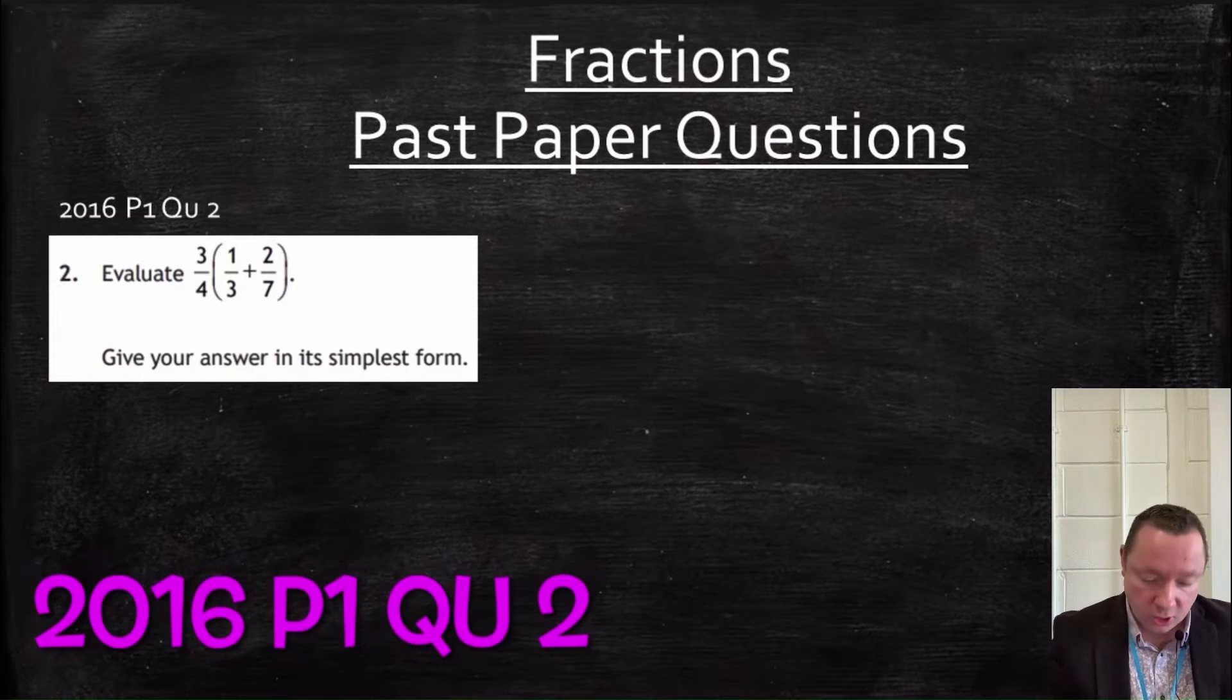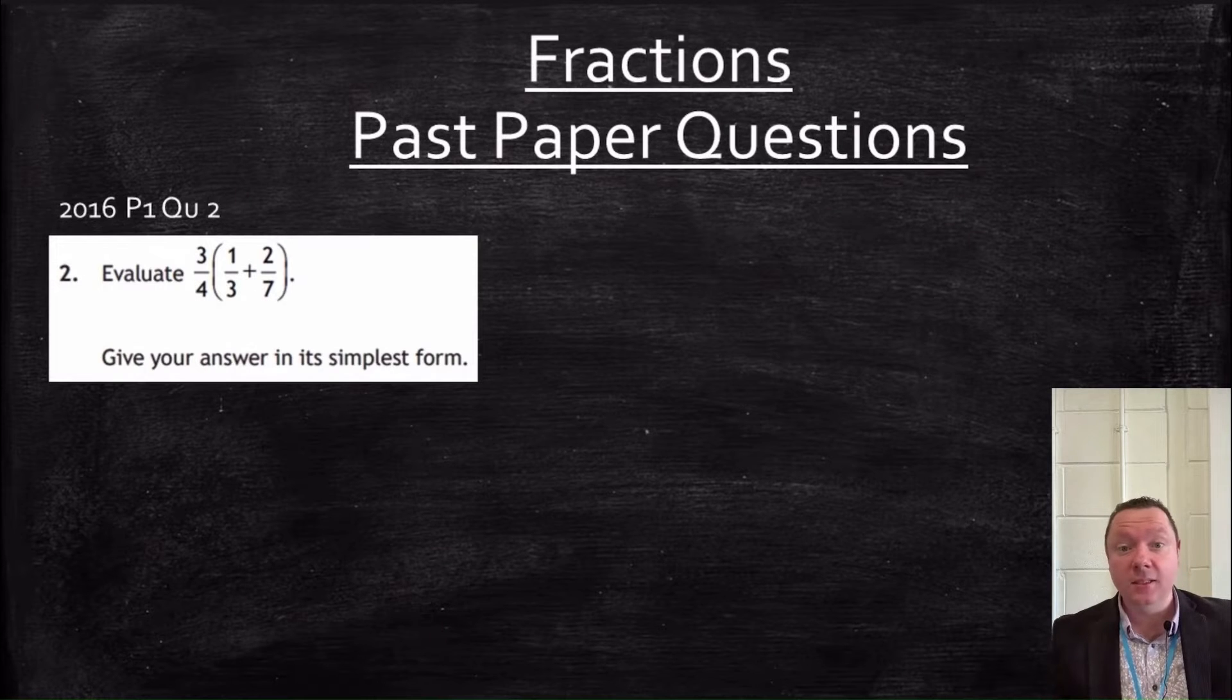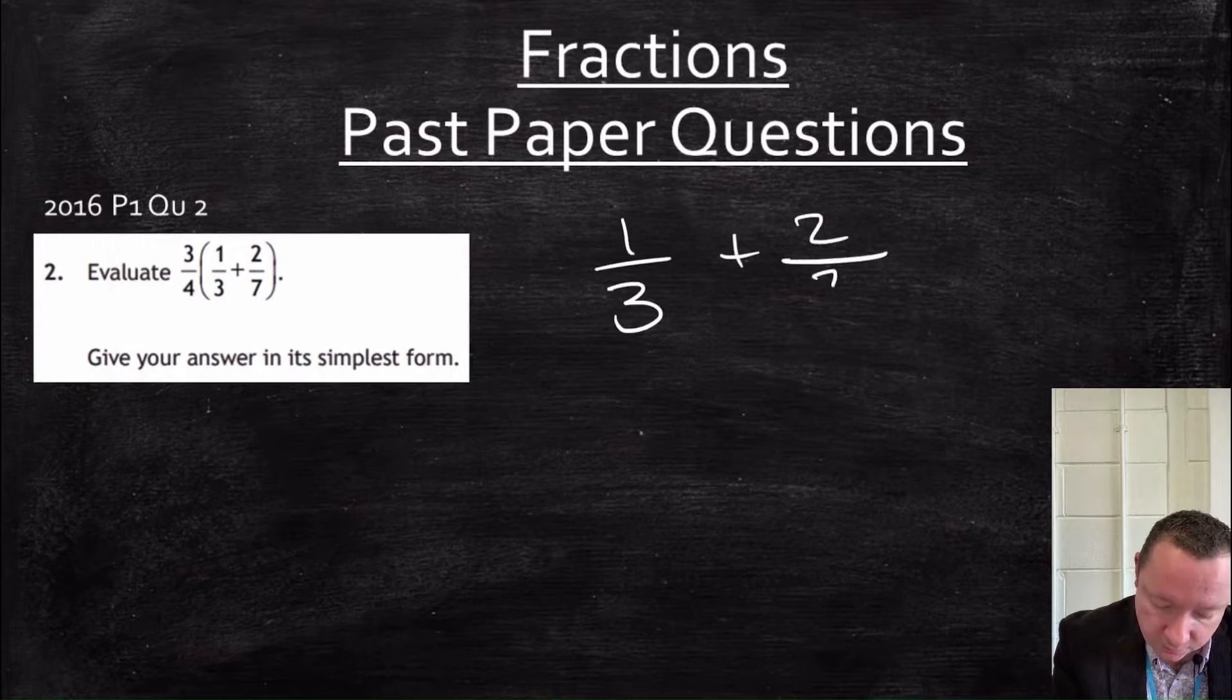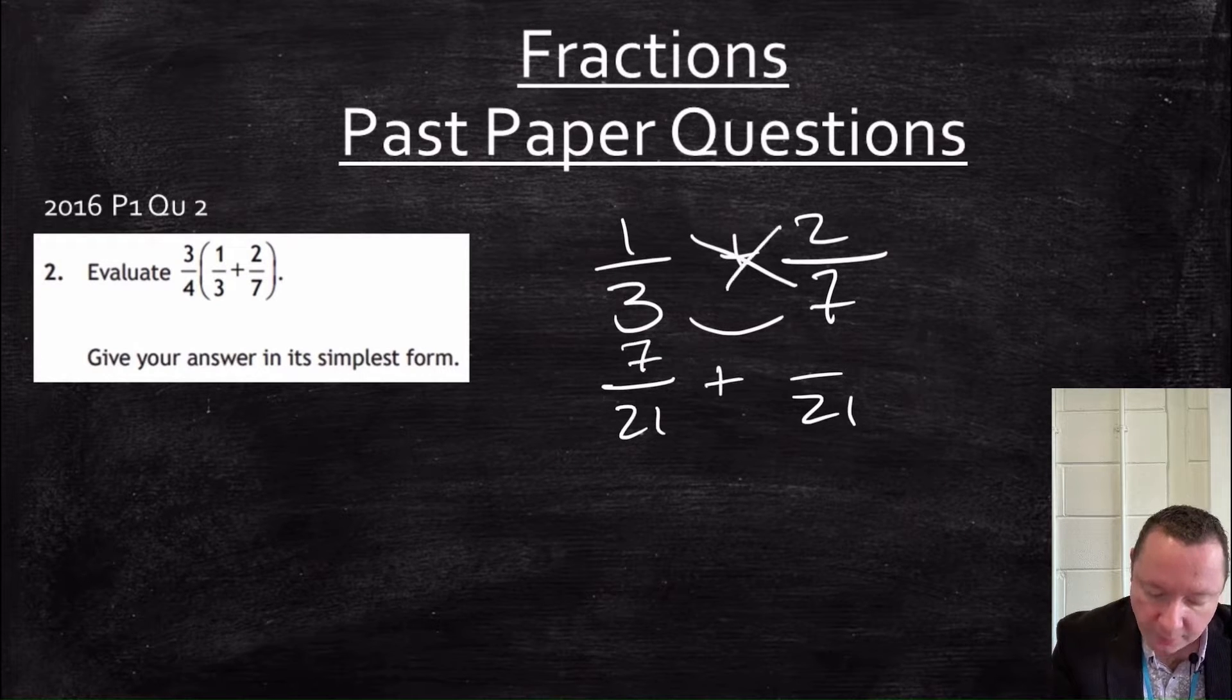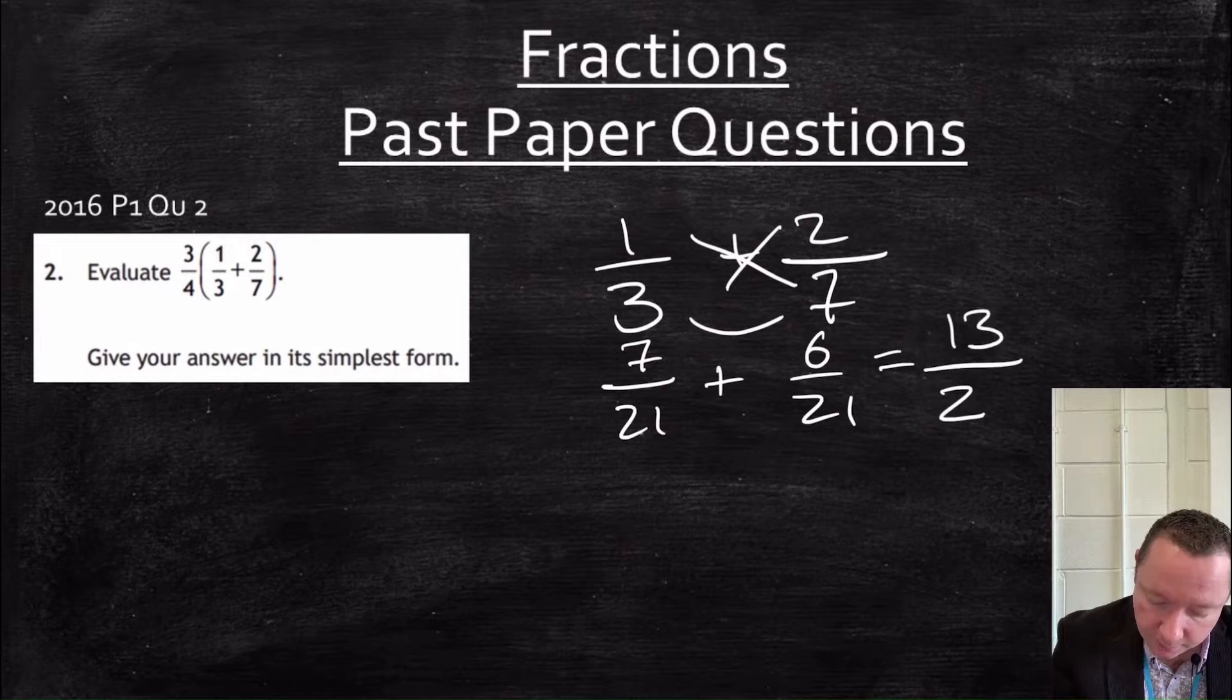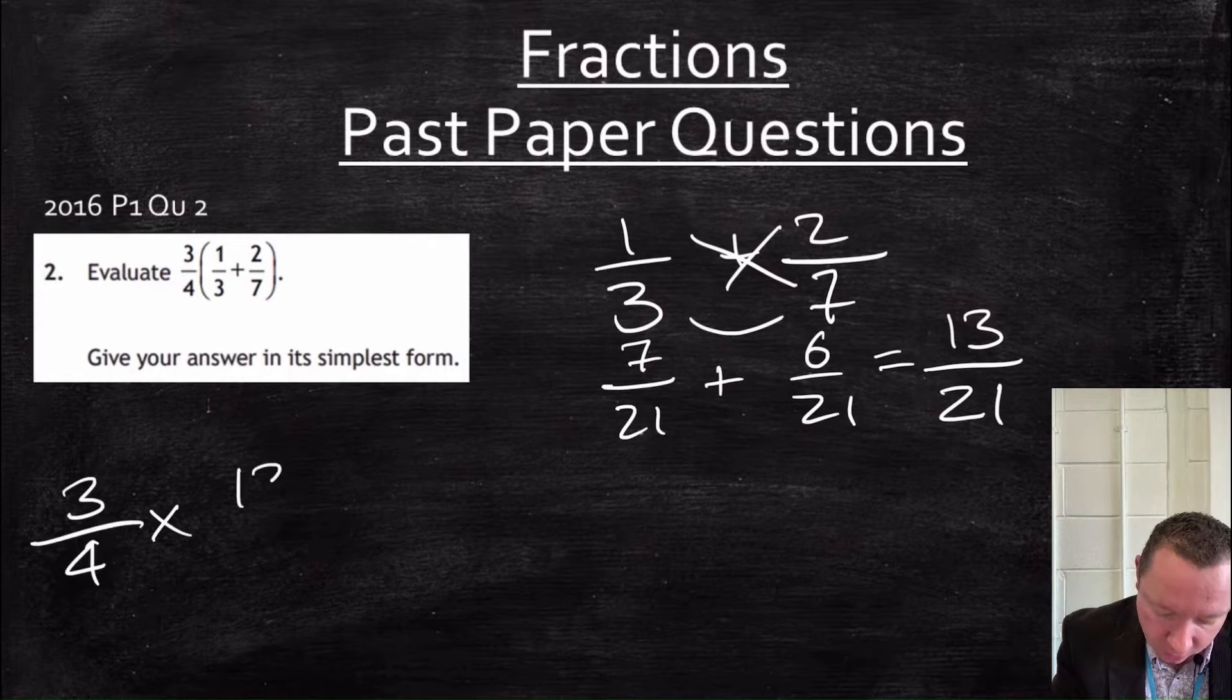2016, paper 1, question 2. 3 quarters, brackets, a third plus 2 sevenths. So BIDMAS gets involved here. I do the bits inside the brackets first, then I times the bit outside. So the first thing I'm going to do is a third plus 2 sevenths. Common denominator is 21, 3 times 7. 1 times 7 is 7 plus 2 times 3 is 6. 7 plus 6 is 13. So we get 13 out of 21. So we've got 3 quarters times the answer we've just got, 13 out of 21.